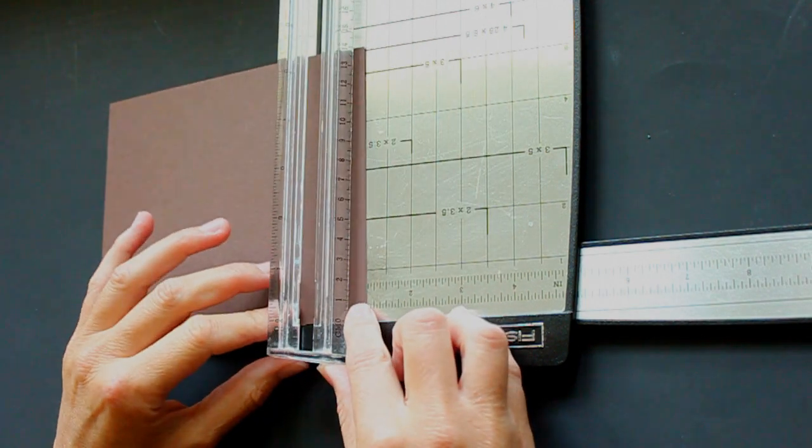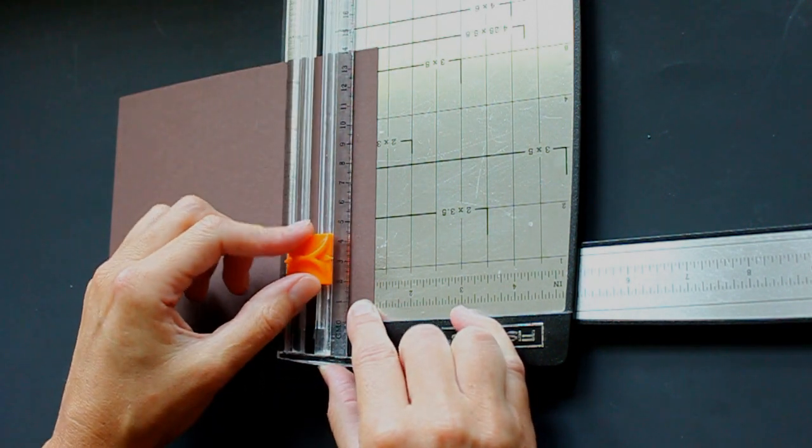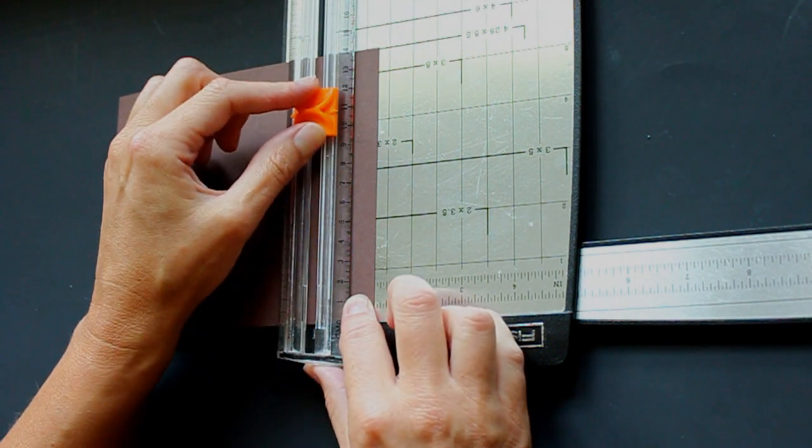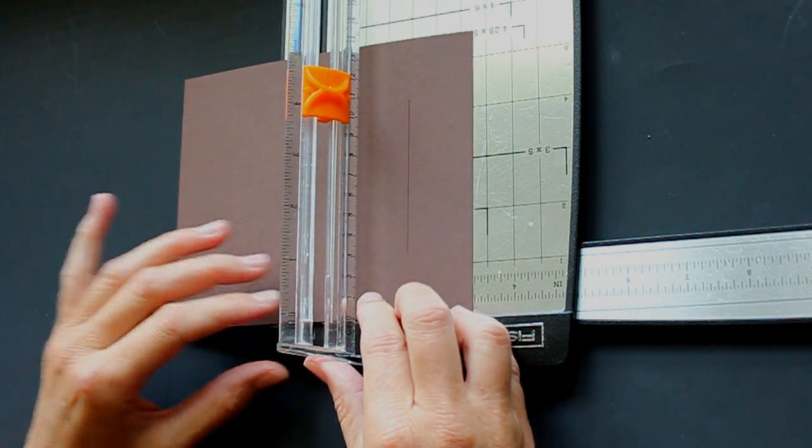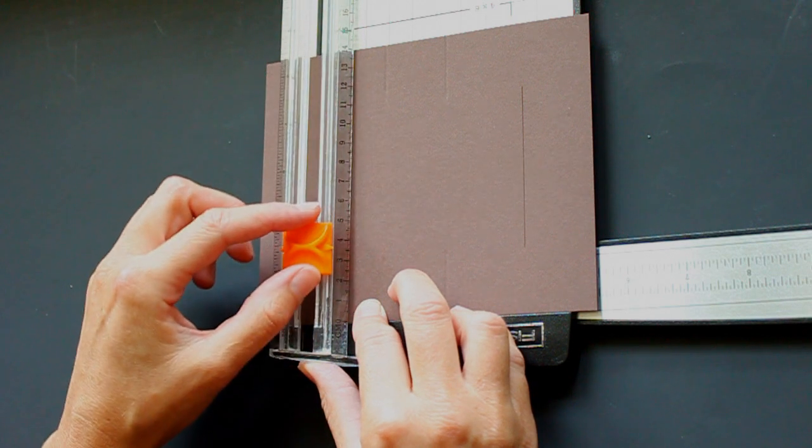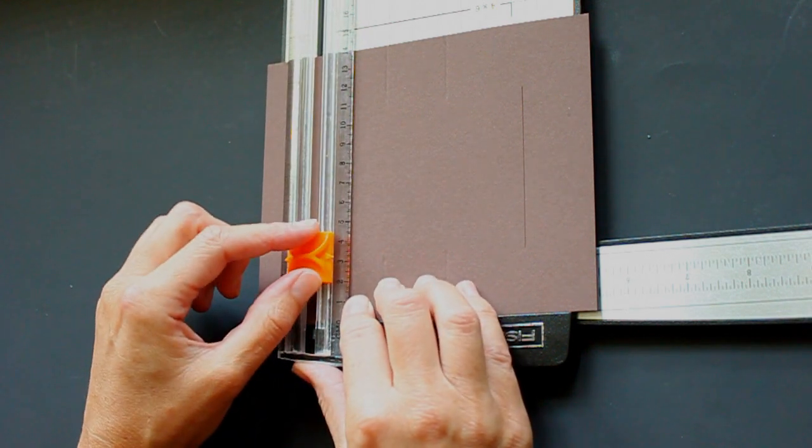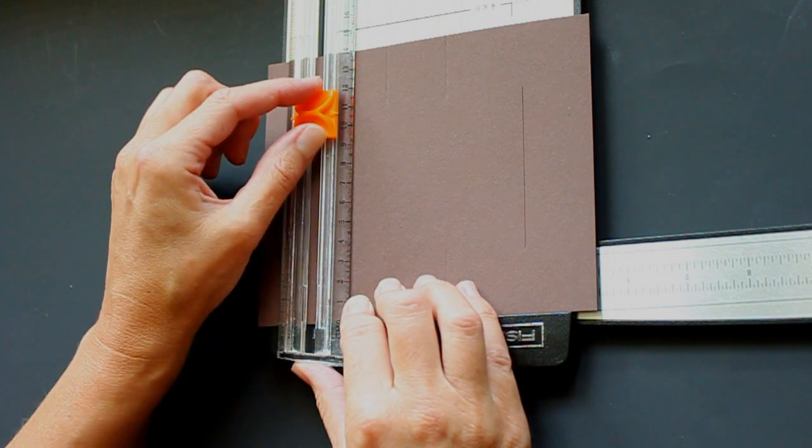Now move your cardstock back to 1 1⁄4 and take your cutting blade and cut from 1 1⁄4 to 4 1⁄4. Move your cardstock over to 5 1⁄4 and cut again from 1 1⁄4 to 4 1⁄4.